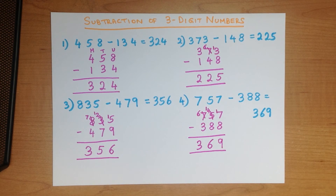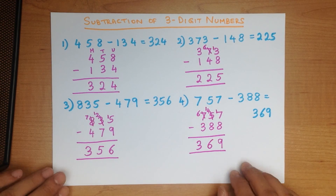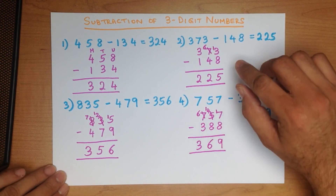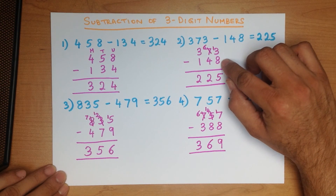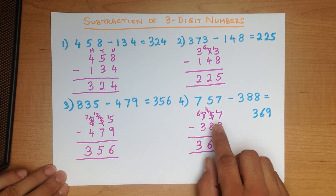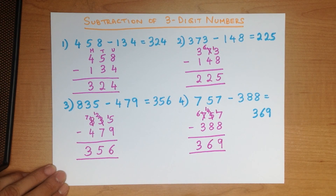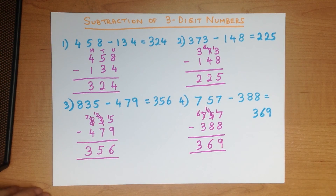So that is subtraction of three-digit numbers using the vertical format. Always make sure you write the numbers down in nice, neat columns — if you do that, subtracting the numbers is a lot easier. The second point is: make sure you identify if the top number is smaller than the number below it; if it is, you can take 1 from the number next to it. Practice again and again until you have mastered this.